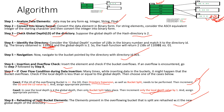To summarize the algorithm: Step 1 — analyze the data element (integer or string). Step 2 — convert to binary. Step 3 — check global depth. Step 4 — identify the directory. Step 5 — store the element in the identified bucket. Step 6 — check for overflow. Step 7 — if overflow: check if local depth equals global depth; if equal, do directory expansion, bucket split, and increment both local and global depth; if less than, only do bucket split and increment local depth. Step 8 — rehash the split bucket elements.